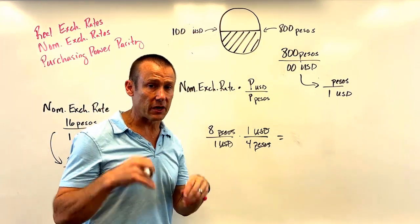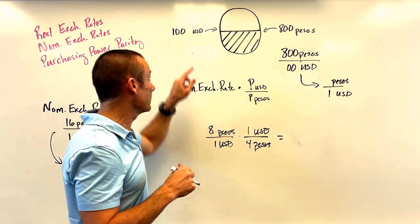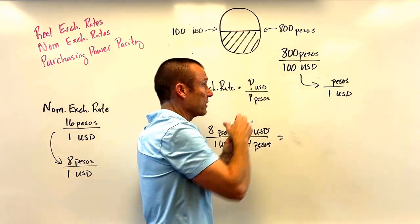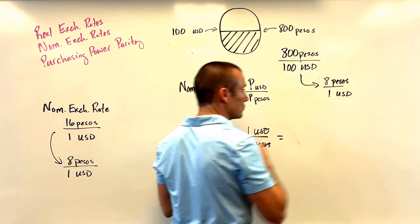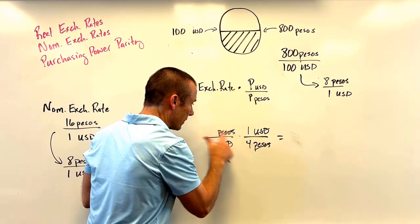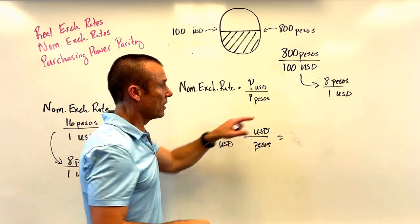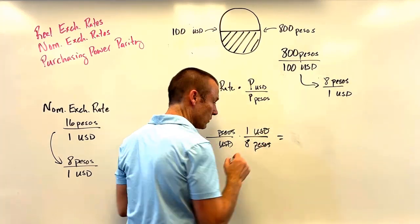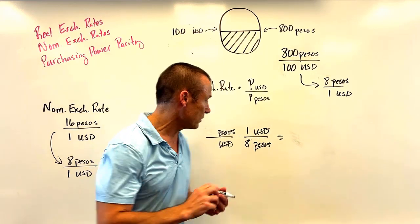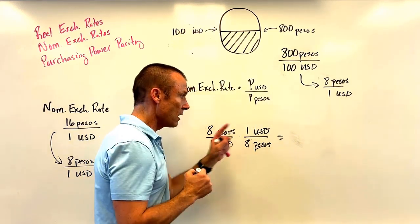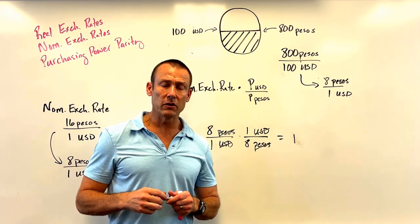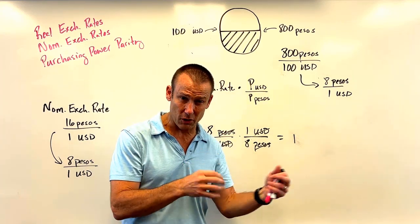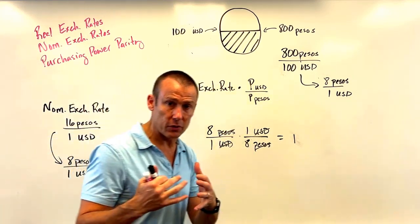With prices unchanged, the PPP rate is still 800 over 100, which is 8 pesos per USD. The new nominal rate is also 8 pesos per USD. So the real exchange rate is: 8 pesos per USD times 1 USD per 8 pesos = 8 divided by 8 = 1. The real exchange rate went from 2 to 1 — that's a depreciation in real terms.